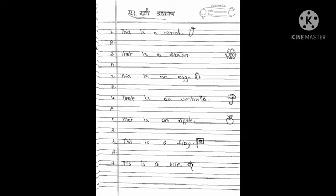See the next one, second one: 'That is a flower.' I draw here a flower away from the sentence — that means which is far away from us. That means waha.